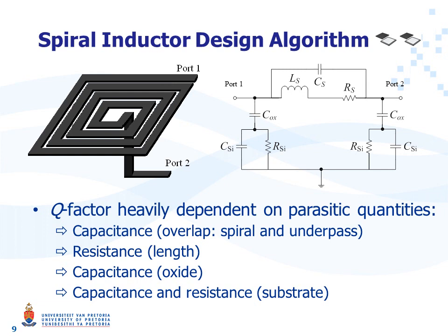The quality factor is the second most important way of characterizing spiral inductors. It can be defined as the ratio of wanted and unwanted quantities of the inductance circuit. In this case, the wanted quantity is the inductance, and the parasitics are all other components seen in the figure on the right. The quality factor is heavily dependent on the capacitance C_S, which arises due to the overlap between the spiral and the underpass — the second metal layer used to bring the inner turn of the inductor to the outside of the chip. It is also dependent on the resistance R_S due to the length of the spiral, the oxide capacitance C_Ox, and finally the substrate capacitance C_Si and resistance R_Si.